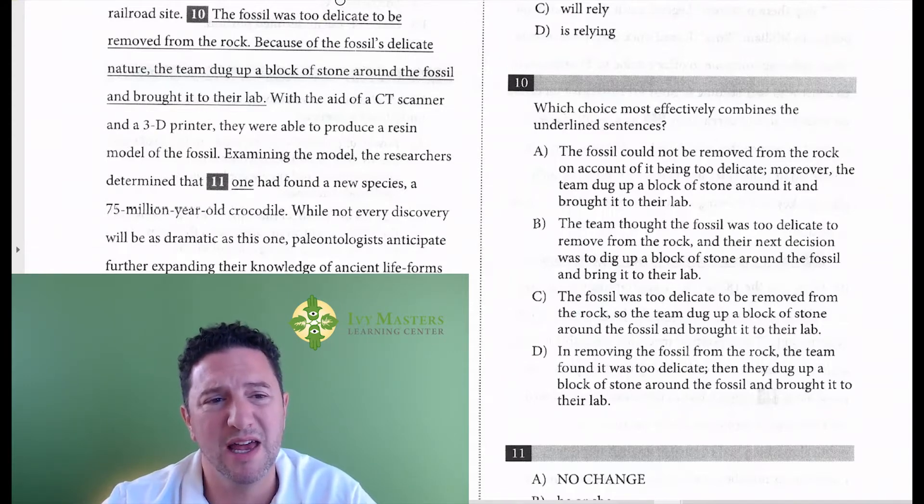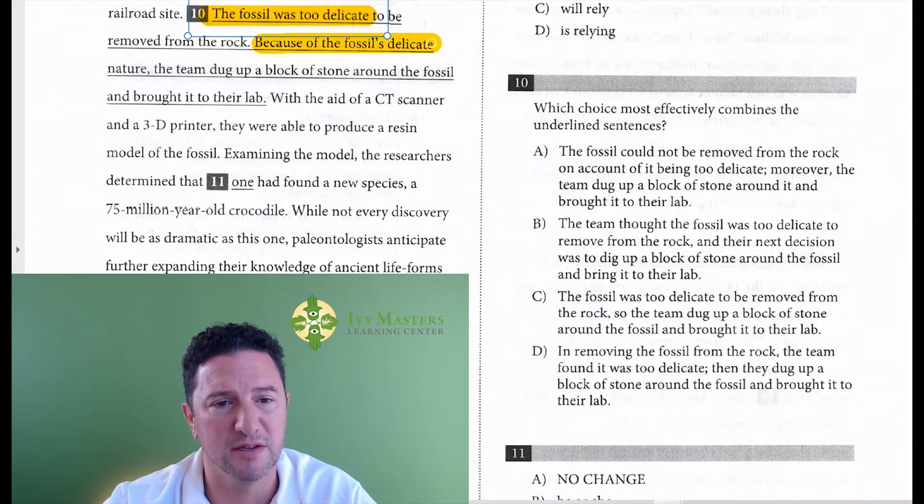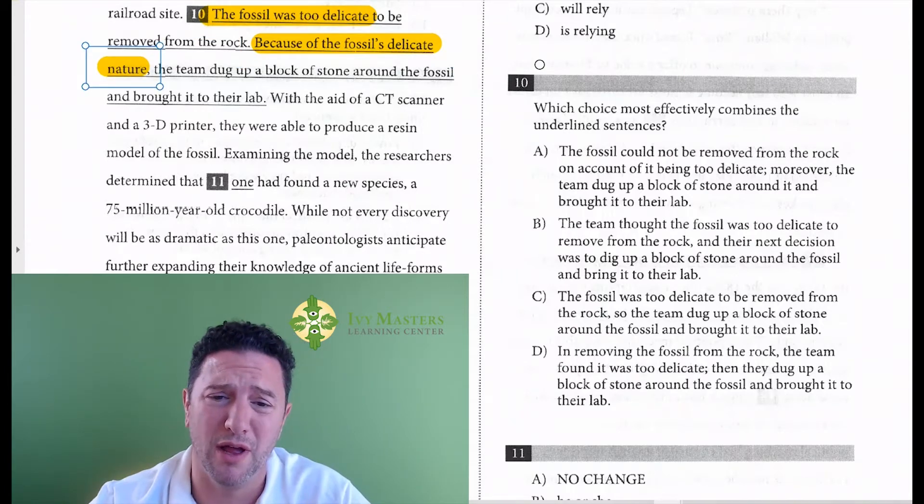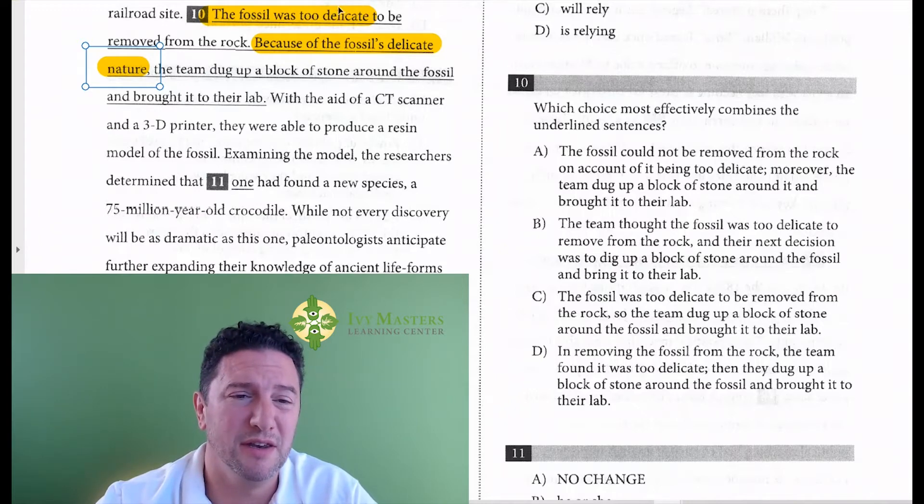Notice it says the fossil was too delicate, and then it says again, because of the fossil's delicate nature. It says that twice. I'm looking for the result to be not redundant, not say the same thing twice. It's kind of wordy.